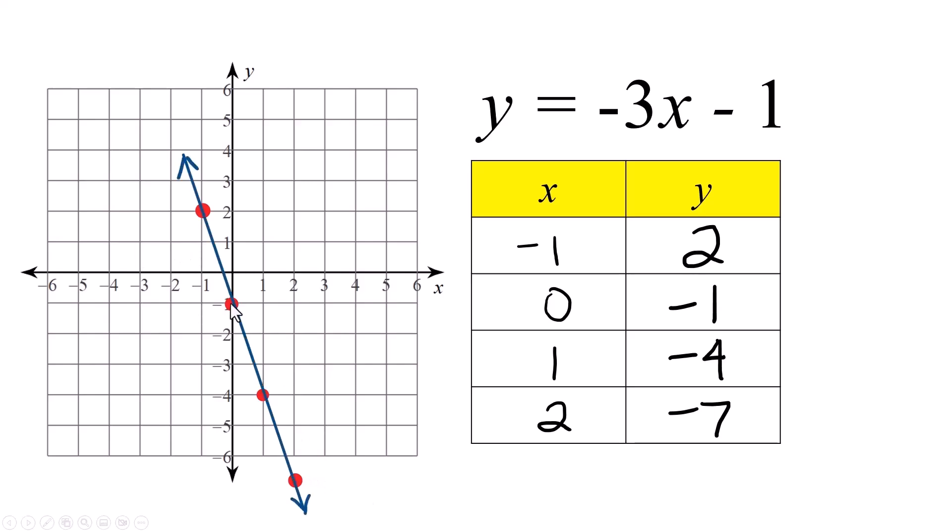Where does it cross the y-axis? Right there. That's the visual. That is your y-intercept. And where does that negative 1 show up in the equation? Right there.